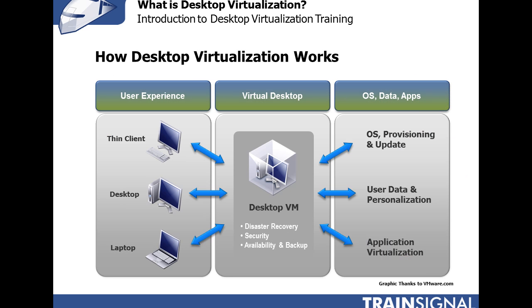Now let's talk about how desktop virtualization works. On the left hand side, you've got the user experience — the end user device they're using to access the virtual desktop in the data center. It could be a thin client, an existing desktop computer, or a laptop. They access their virtual machine in the virtual data center. That virtual machine is really broken up into three different pieces: the operating system, the user data or their personalizations, and the applications — which typically have been virtualized using application virtualization.